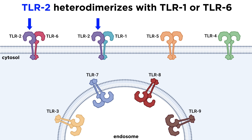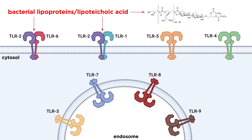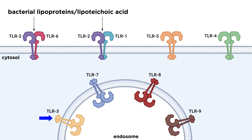First, TLR2 heterodimerizes with TLR1 or TLR6 to bind bacterial lipoproteins and lipoteichoic acid, a common component of gram-positive bacterial cell walls. TLR3 is located on the inner surface of the endosome. It recognizes double-stranded RNA, which is a feature of many viral genomes.